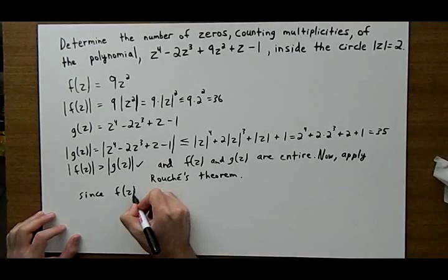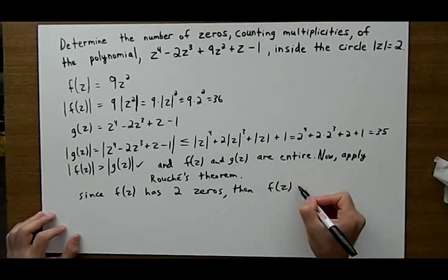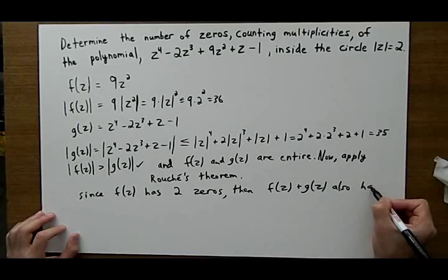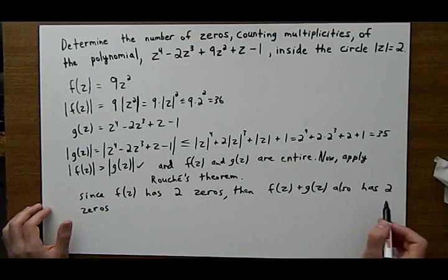And that's because we're applying Rouché's theorem. That's the result of Rouché's theorem. That's the conclusion. So but what's f of z plus g of z?